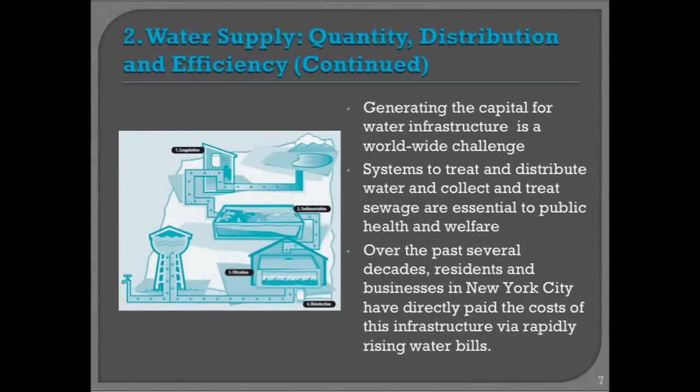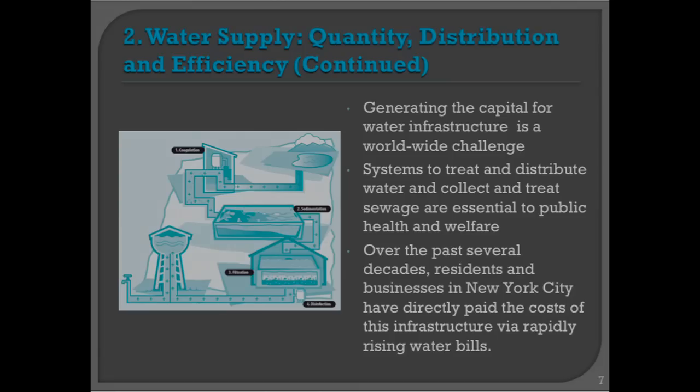A project like the Colorado River project, which is how the western part of the United States distributes most of its water, would simply be impossible in other parts of the world. Generating the capital for water infrastructure is a worldwide challenge. Systems to treat and distribute water and collect and treat sewage are essential to public health and welfare. The Procter & Gamble packets we discussed in the case study are a short-term solution. The long-term solution requires enough capital to do this.